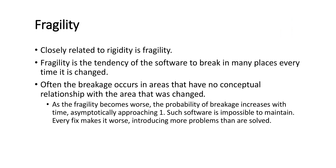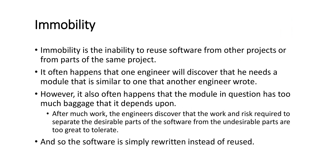The third symptom is immobility, which is an interesting one. When we try to create modules, we do so for one basic reason — we want to emphasize reuse of code. We don't want to spend time inventing the wheel or creating the same module again every time. We believe that something created by someone else can be used in our own code. This is what you can call component reuse. Immobility is the inability to reuse software from other projects or from parts of the same project.